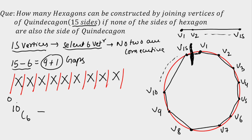Specifically, if I have selected the first gap and the last gap on the straight line, that means I have selected V1 and V15. On the straight line they appear far apart, but on the original circle V1 and V15 are consecutive vertices. So that selection is not acceptable. I have to delete from the total all cases where V1 and V15 are both selected.